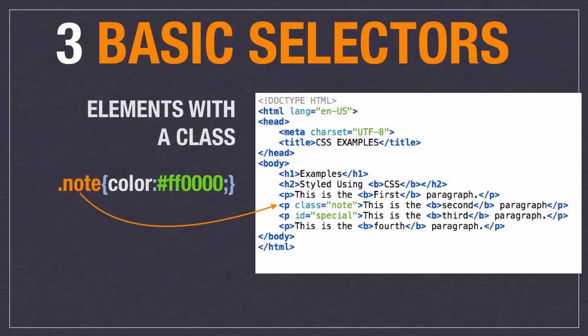The second kind is elements with a class. Here I used a 'note' class. Notice it's slightly different how you write it in CSS versus HTML. In HTML, you write: P class equals note, giving it a class of note. In the CSS, you use a dot — so dot note means look for something with a class of note. You can apply a class to any element inside the body, and you can apply it one time or 15 times on the page. It's a good way to select specific paragraphs or specific things, using class equals and then the class name.